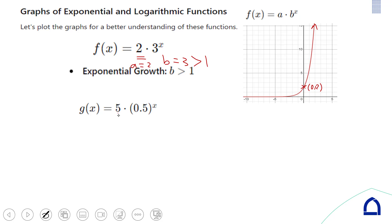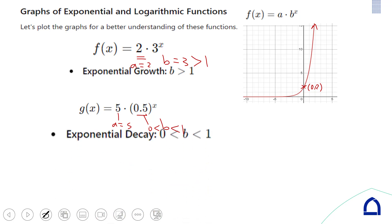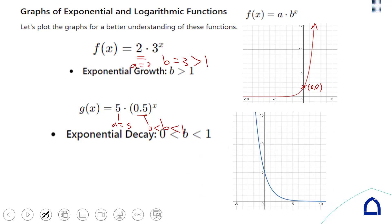For the other function g(x), a = 5 and b is between 0 and 1, so we have exponential decay. The y-intercept is at (0, a) = (0, 5). In both cases the horizontal asymptote is the x-axis — the x-axis is the horizontal asymptote for both exponential growth and exponential decay curves.